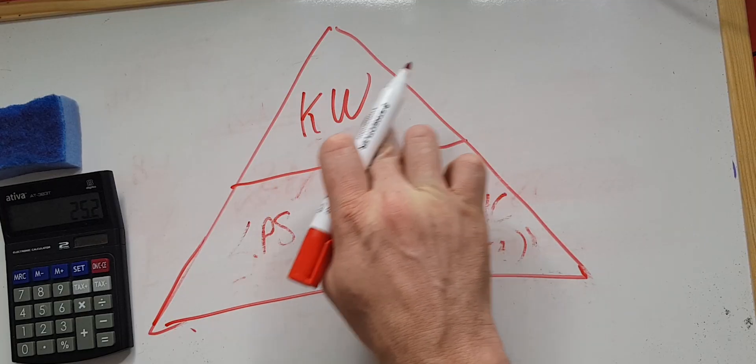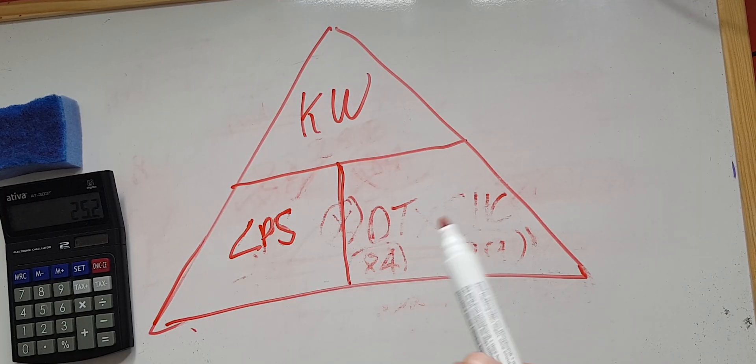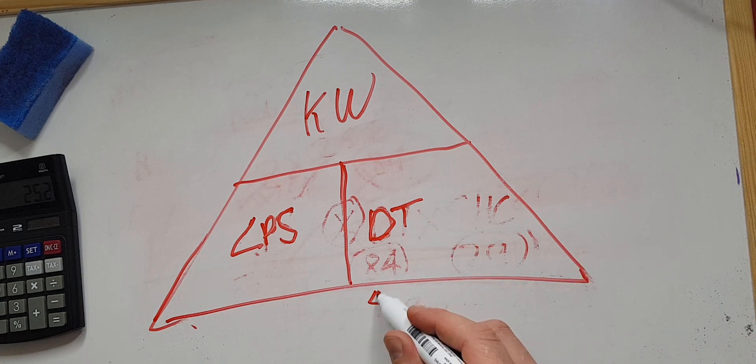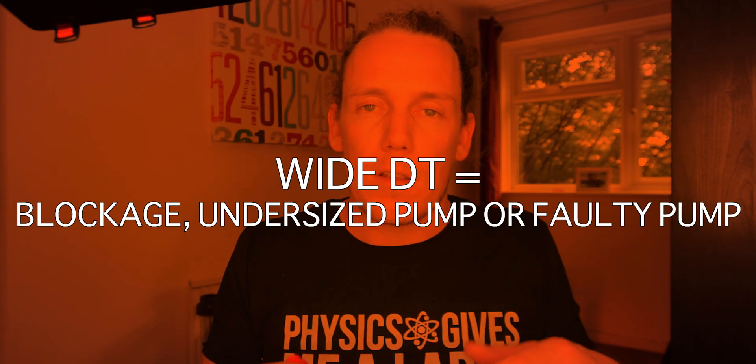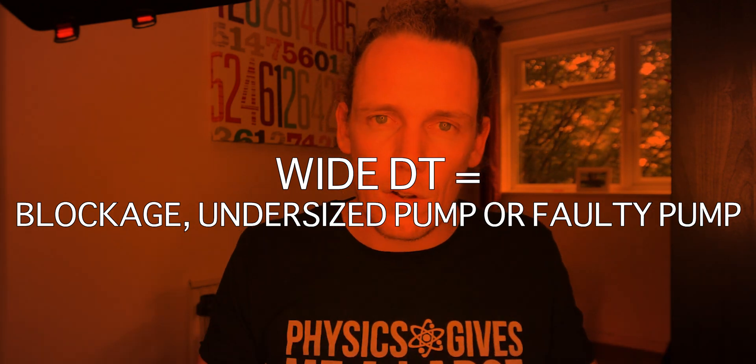Let's do another one. Let's say you had a boiler that was overheating — generally with boilers, if they're overheating, you can feel the flow pipes really hot and the return's really cold. If you've got a hot flow and a hot return, you know you've got a wide delta T. Just for illustrative purposes, let's say we had a delta T of 40. If you measure delta T 40 and go through this, you'll see that you're not getting very many liters per second — so it's obvious that if you've got a wide delta T, you haven't got enough flow.